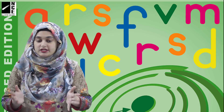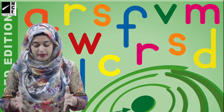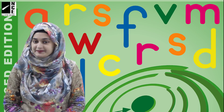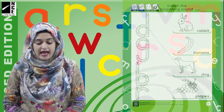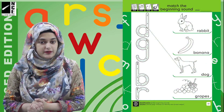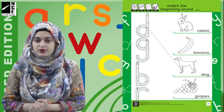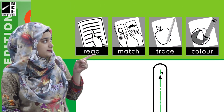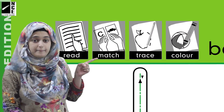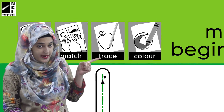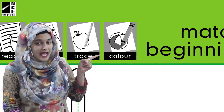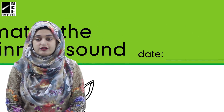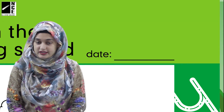Take your workbook out and open page number 30 and 31. Now on page number 31, the icons we have are read, match, trace and colour. And then you have to fill the date section.